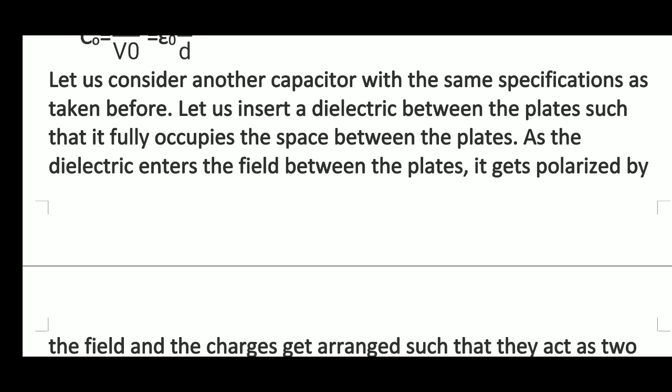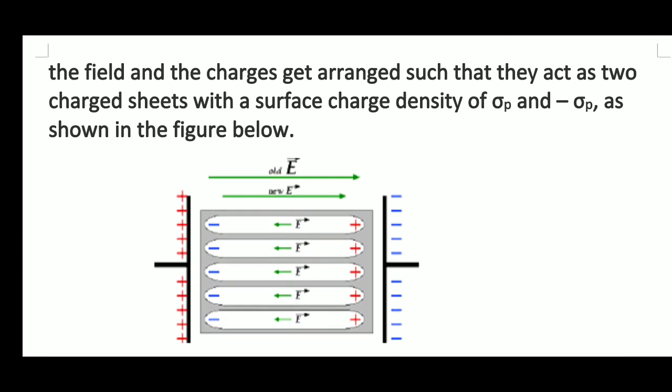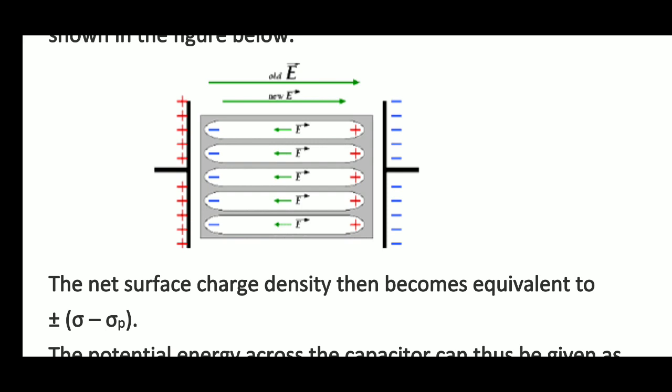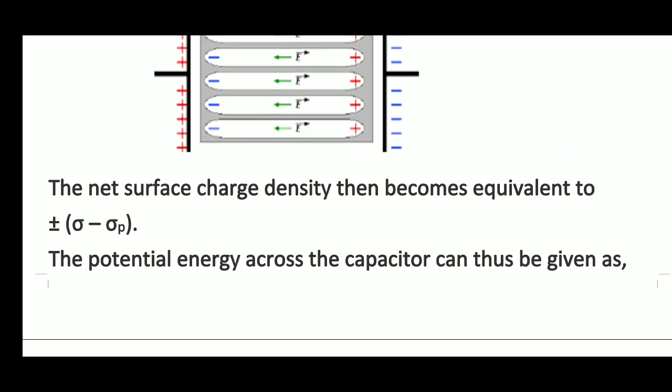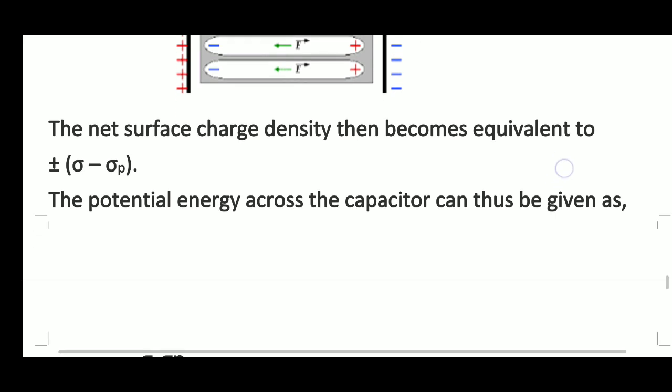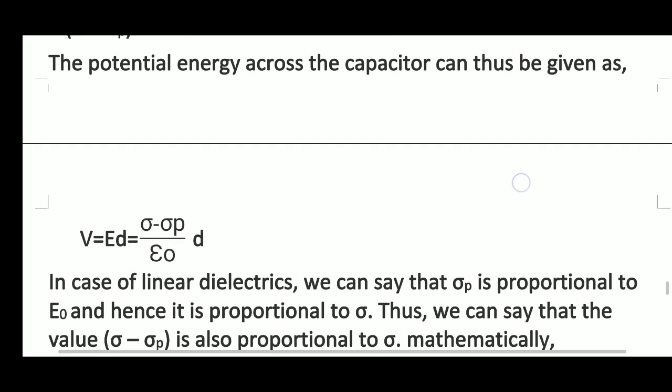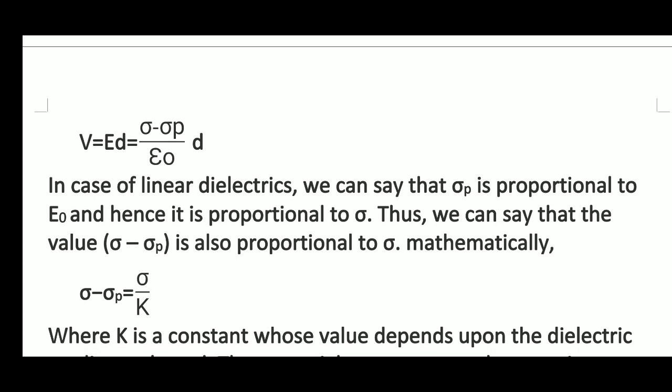Now consider another capacitor with the same specification. Let us insert a dielectric medium between the plates such that it fully occupies the space between the plates. As the dielectric enters the field between the plates it gets polarized by the field, and the charges get arranged such that they act as two charge sheets with surface charge densities sigma p and minus sigma p. The net surface charge density then becomes sigma minus sigma p. The potential difference across the capacitor is V equals E times D, that is sigma minus sigma p upon epsilon nought times D. For a linear dielectric, sigma p is proportional to E nought and hence proportional to sigma, so sigma minus sigma p is also proportional to sigma.